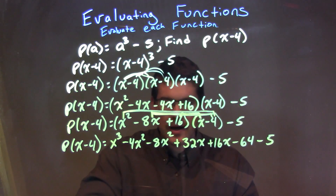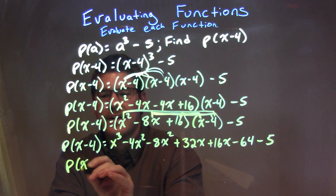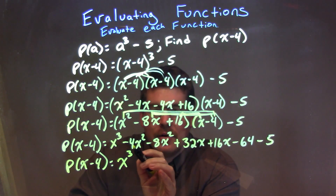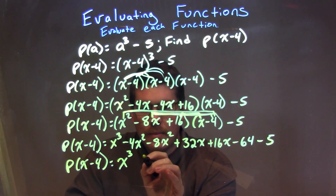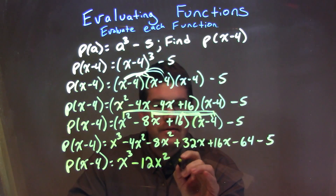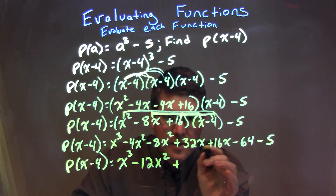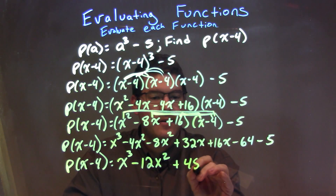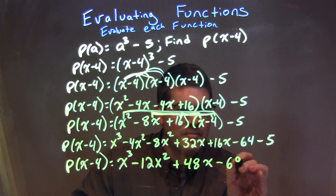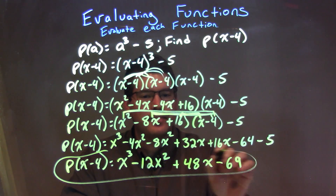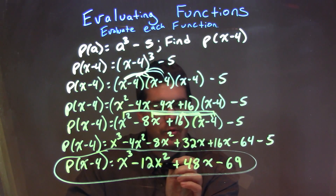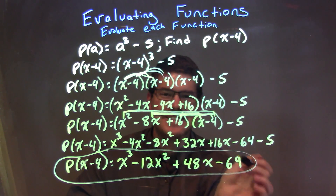Now we simplify by combining like terms. We have p of x minus 4 equal to x to the third. Combining the x squared terms: negative 4x squared and negative 8x squared gives negative 12x squared. Combining the x terms: 32x plus 16x is positive 48x. And combining the constants: negative 64 minus 5 is negative 69. So our final answer is p of x minus 4 is equal to x to the third minus 12x squared plus 48x minus 69.